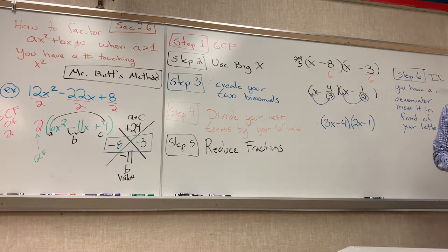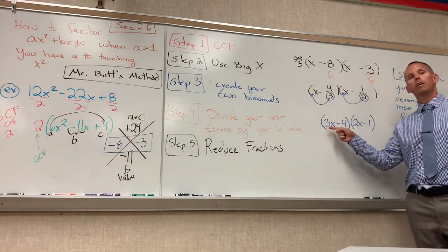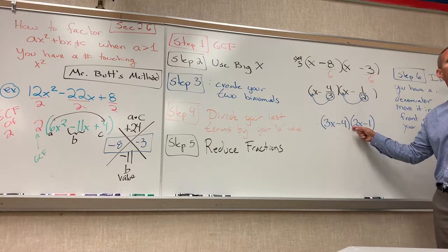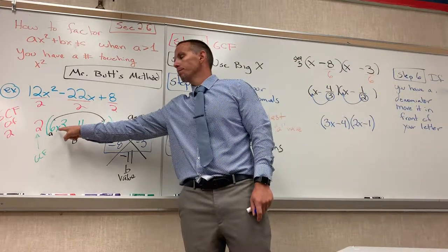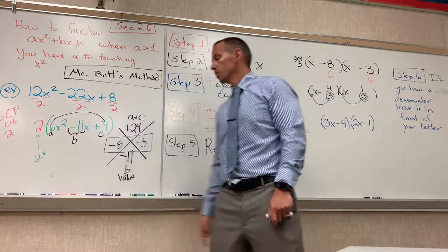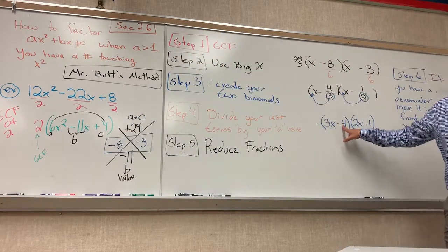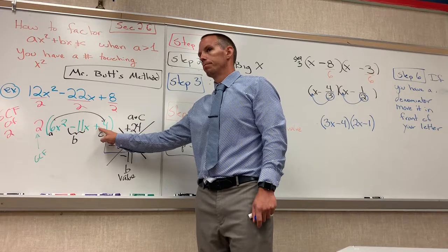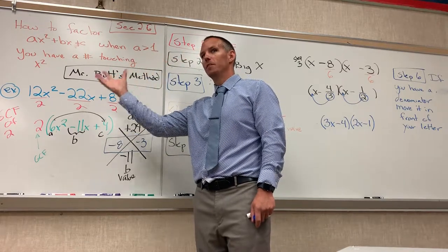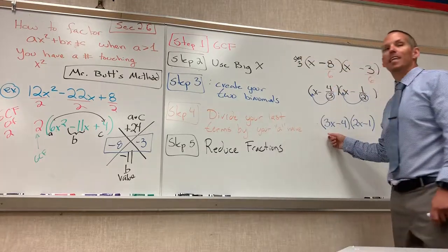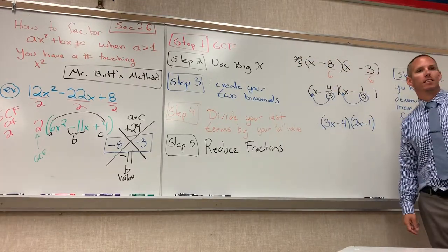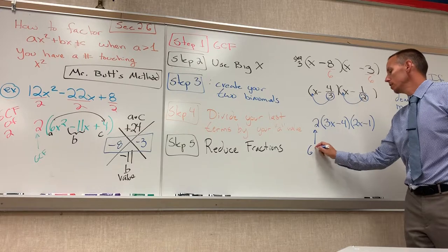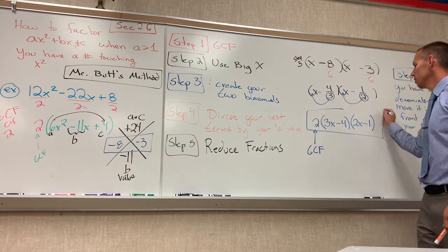Watch. What is 3x times 2x? 6x squared. What is negative 4 times negative 1? Positive 4. There's only one other thing I'm forgetting because I can't box that yet. What am I forgetting? Good. GCF. You've got to write the two out in front. So there would be your two, which is your GCF. Box it. We're done.